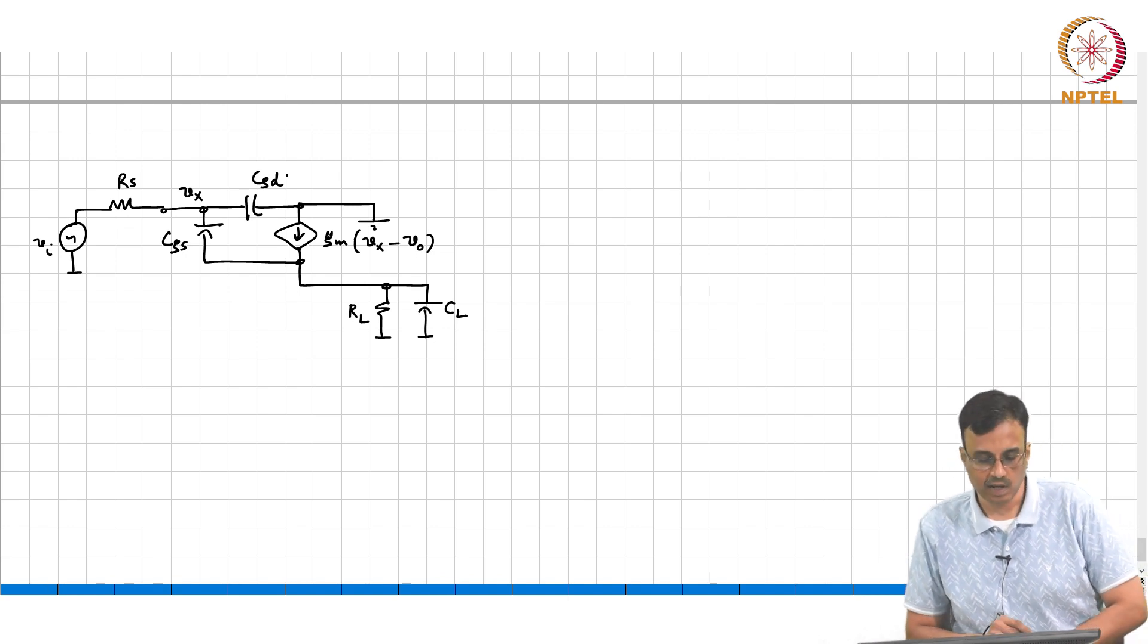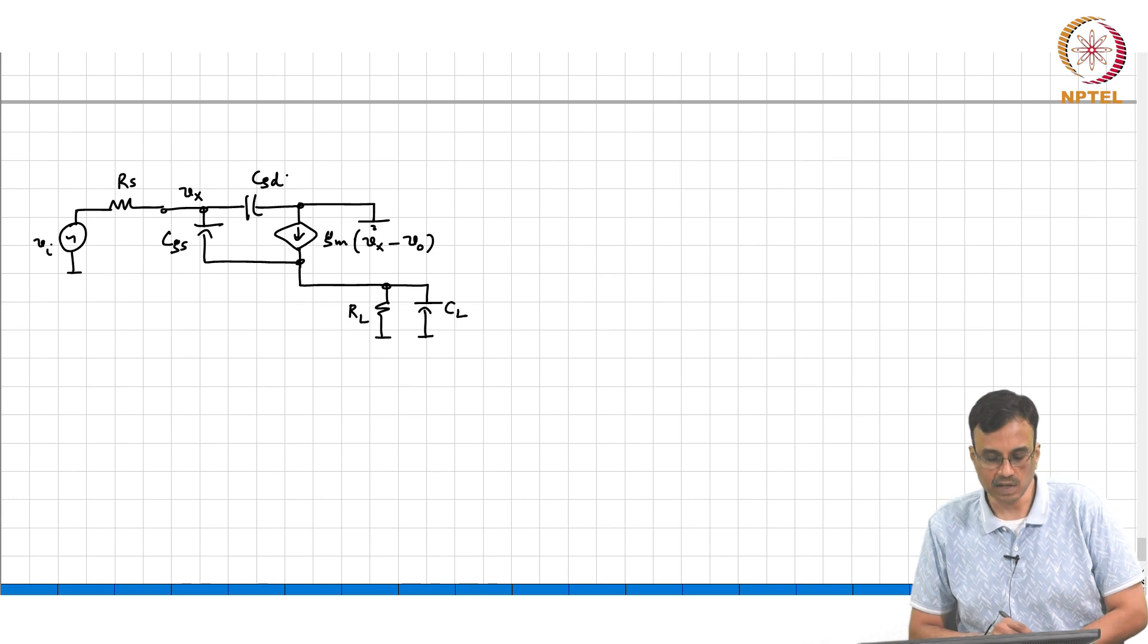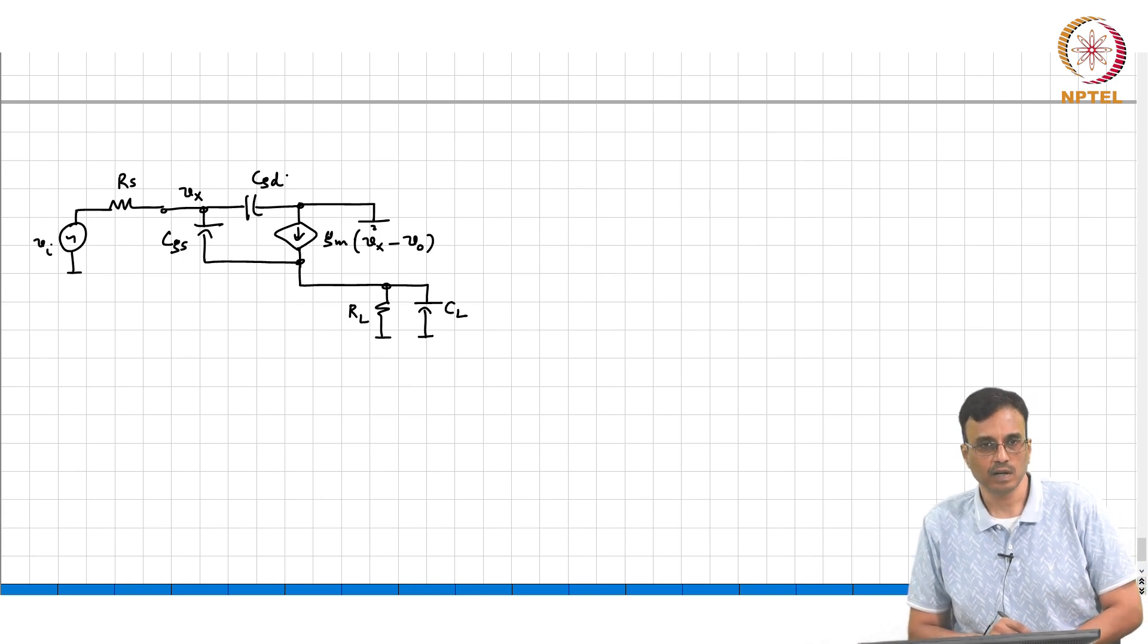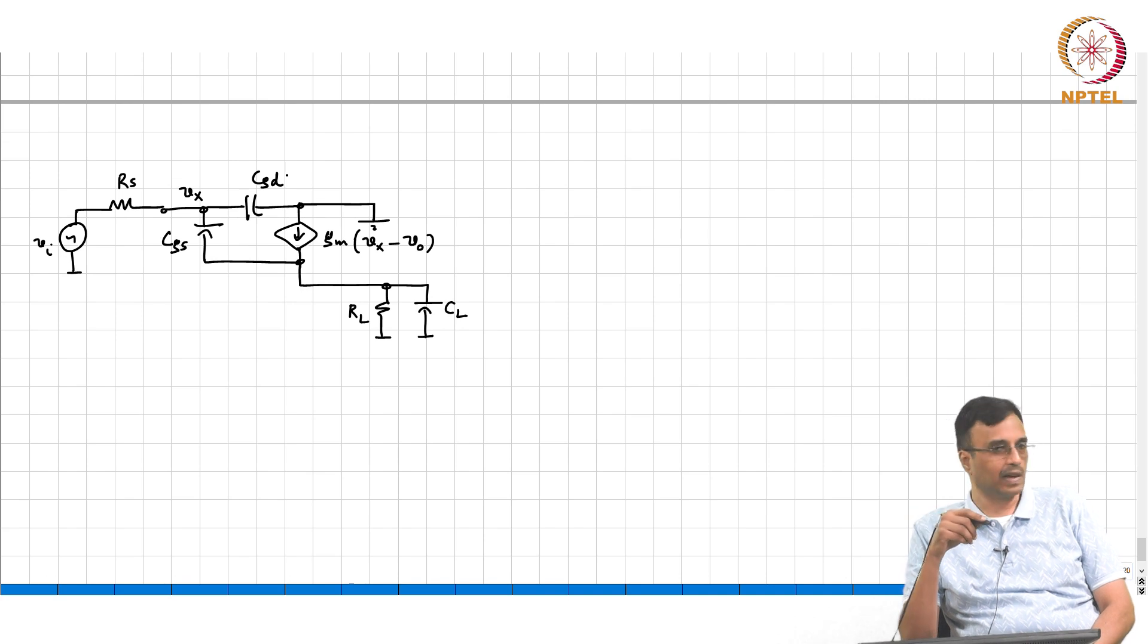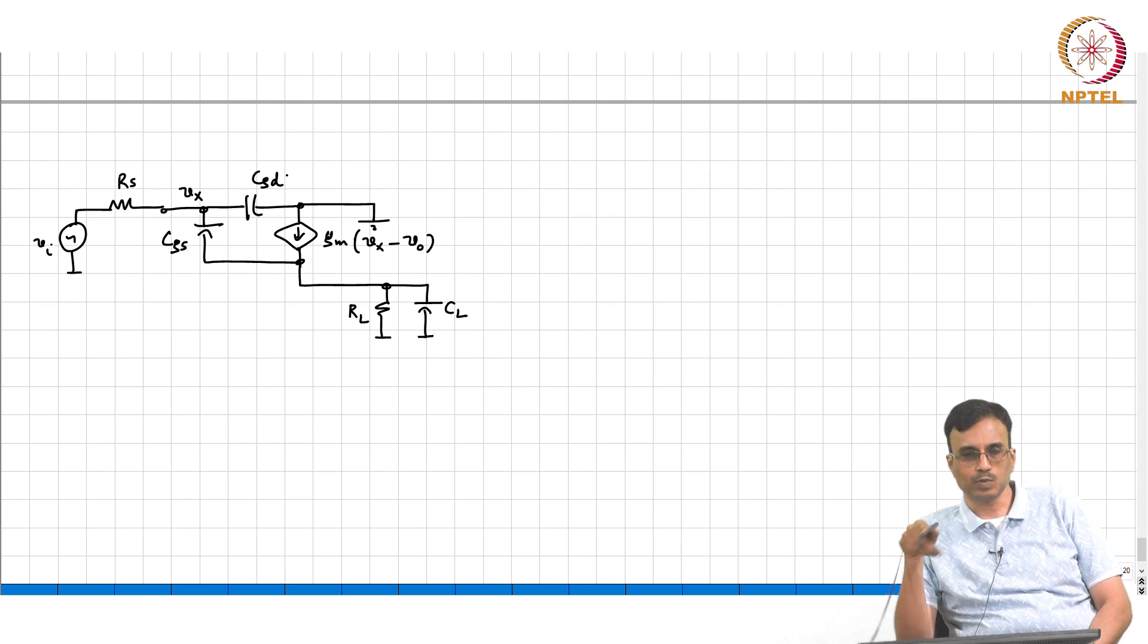So again we use the first order analysis. You can also write the full blown expression that will also turn out to be second order. Without going through the algebra, can you comment on whether we will have a zero in the transfer function? One path through CGS, one path through GM. Will the zero be in the right half plane or left half plane?